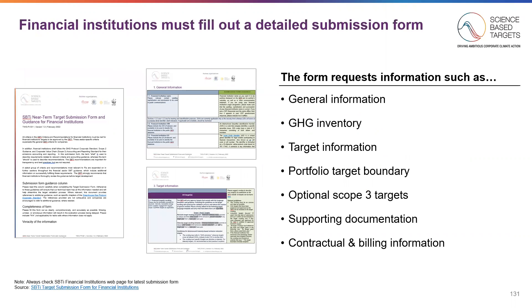To submit your proposed targets to SBTI, a financial institution must fill out a detailed submission form. We recommend that you familiarize yourself with it before delving into the calculation. The form requests critical information necessary to validating, including general information, the GHG inventory, target information, portfolio target boundary, optional Scope 3 targets, supporting documentation, and contractual and billing information. This form can be found on SBTI's Financial Institutions webpage. Always check there for the latest.